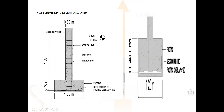Now we come to the neck column. The neck column extends from the footing up to plinth level. This is known as a neck column — it has main bars and stirrups. The total height of the neck column is 1.65 + 0.4 = 2.05 meters, column size 300mm × 300mm.